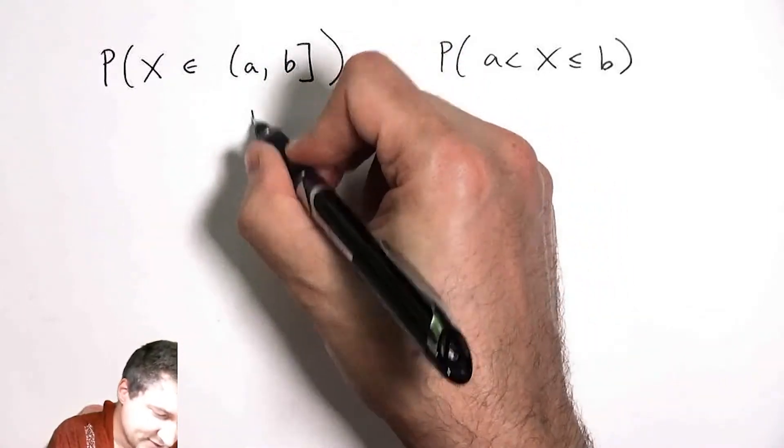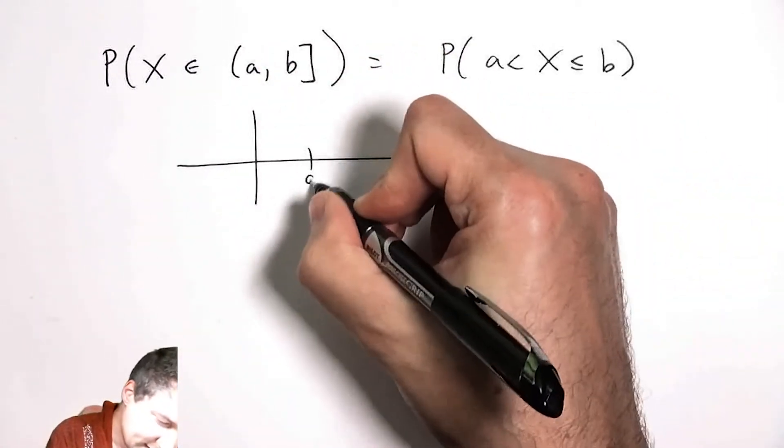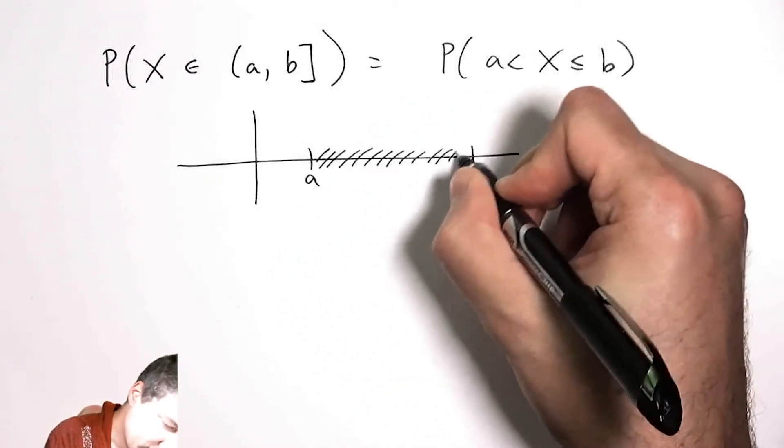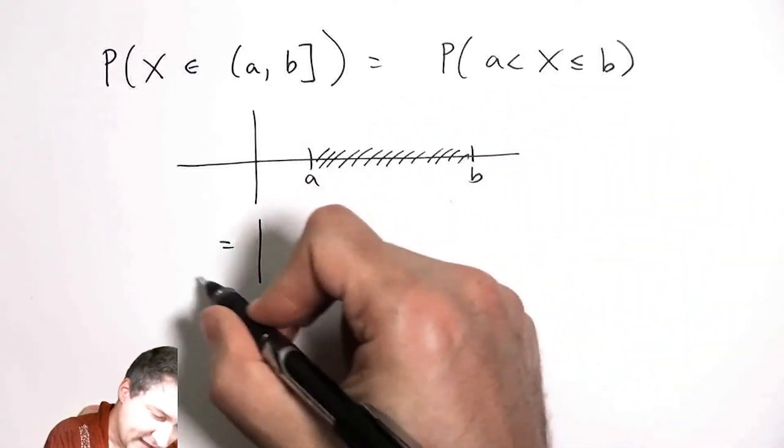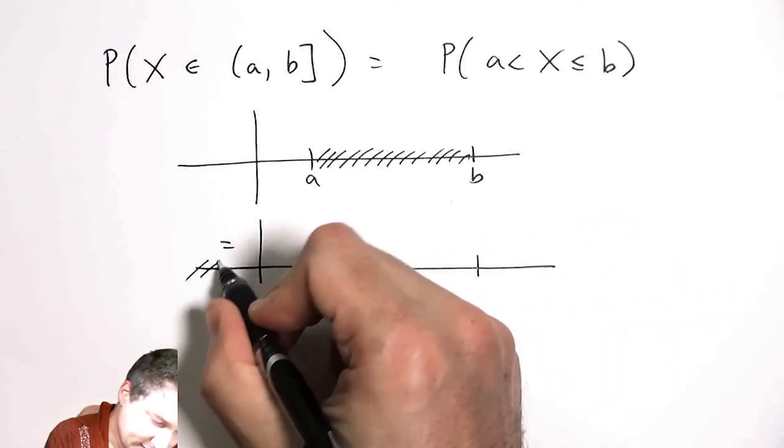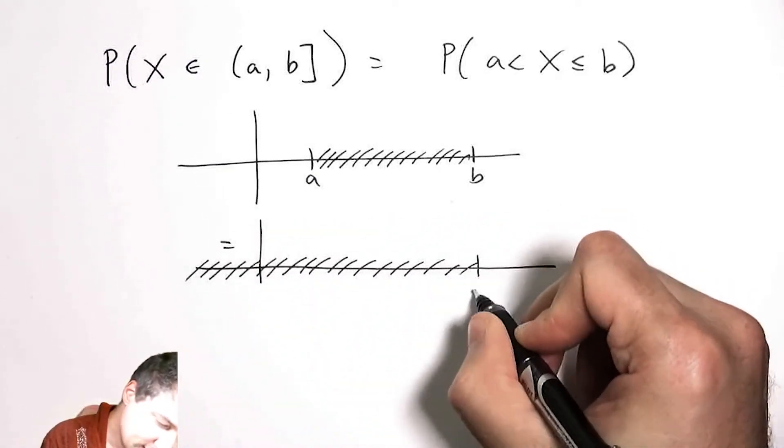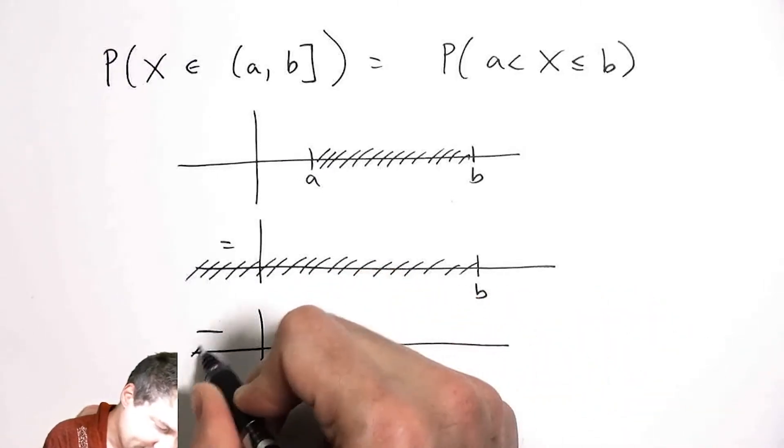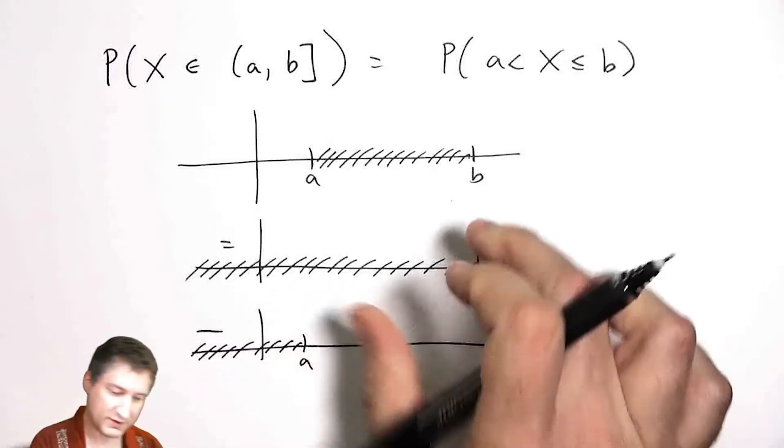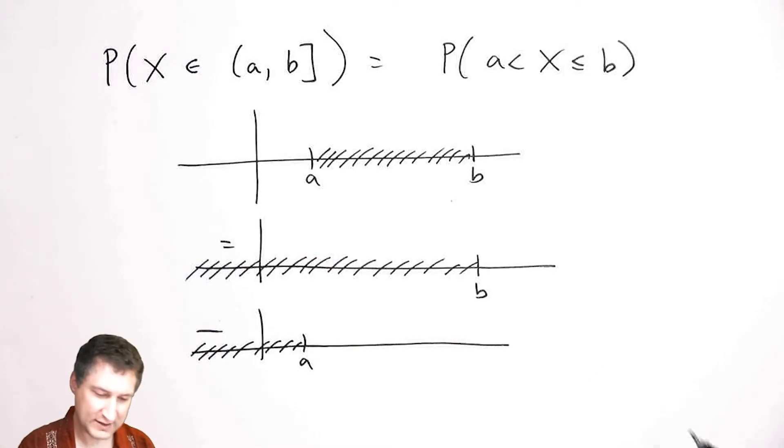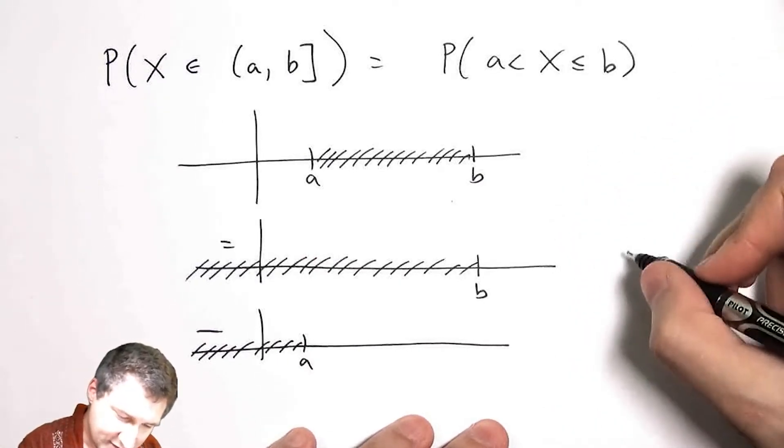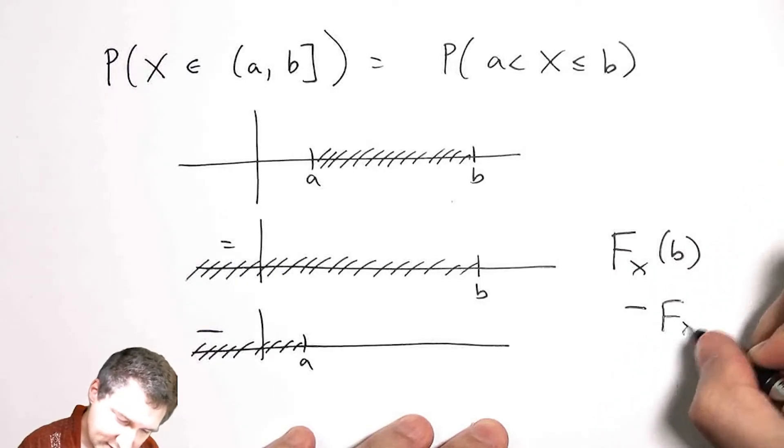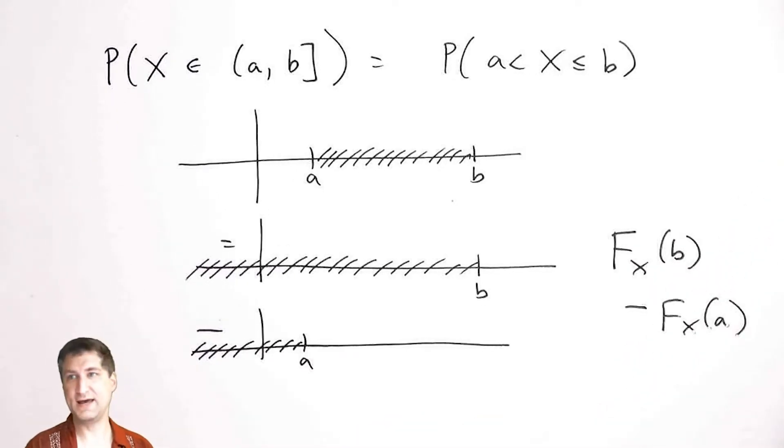Okay, well, I can use the CDF to answer that question. And I think the reason I can use it is, here is my interval in question. I can think about that as taking everything that happened up to b and subtracting everything that happened up to a. And what's left over is just the interval a to b. So this here is actually the CDF at b minus the CDF at a.